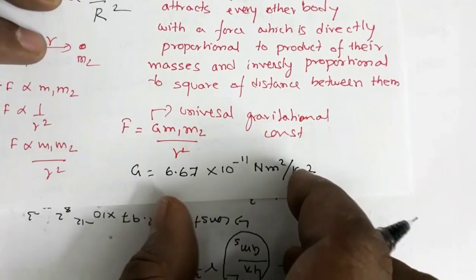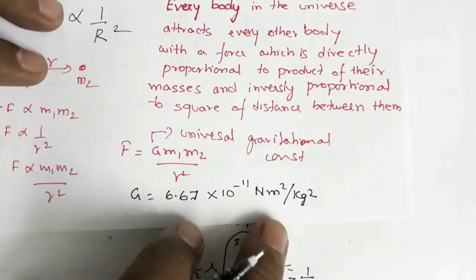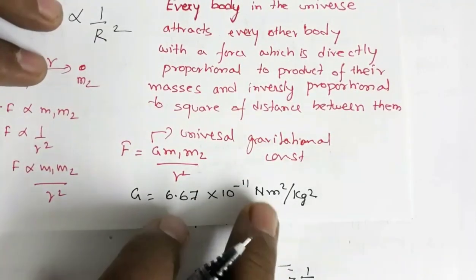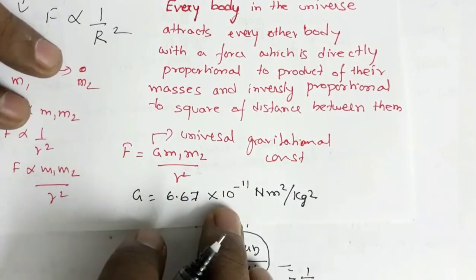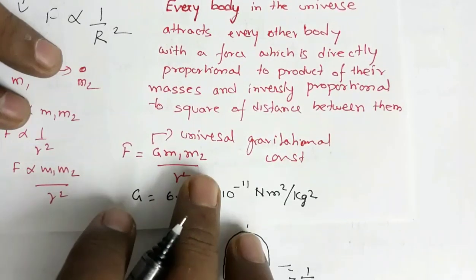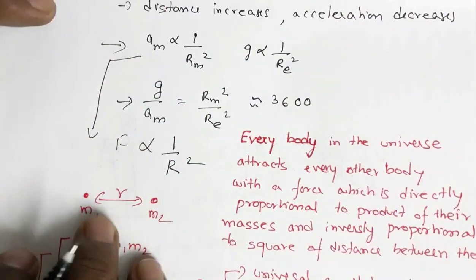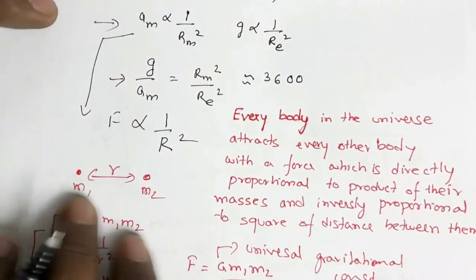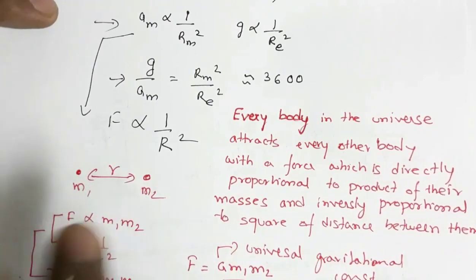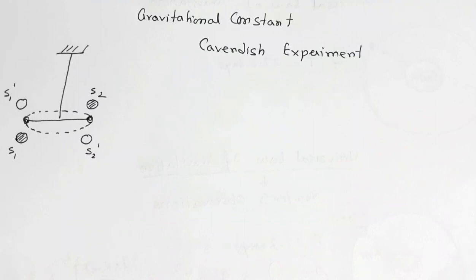G is a constant throughout the universe — for any mass, any system, any medium, this value remains constant. The force of attraction between two masses is independent of the nature of the medium. So the force of gravitation between m1 and m2 will not change whether they are placed in vacuum, in water, or in any other medium. The gravitational force is independent of the nature of the medium.